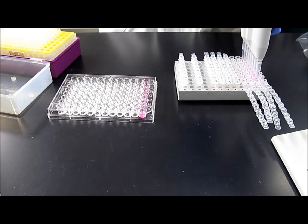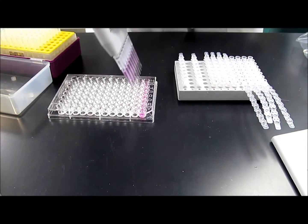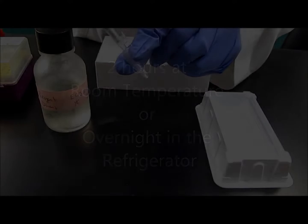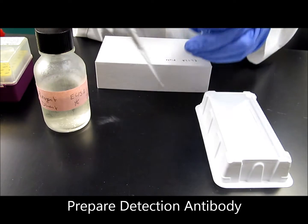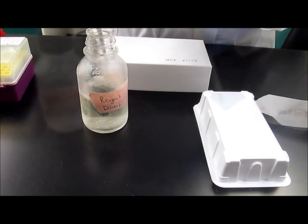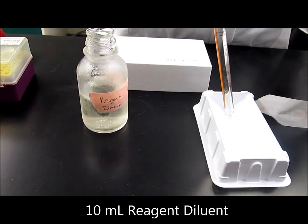At this point you have added your samples to the ELISA plate and have incubated them for 2 hours at room temperature or overnight in the refrigerator. Now you will want to prepare the detection antibody by diluting the correct amount of it in 10 milliliters of reagent dilutant.